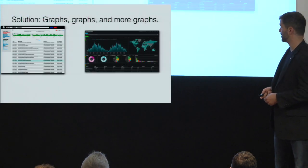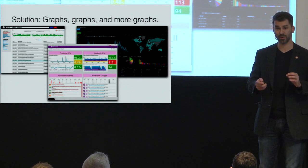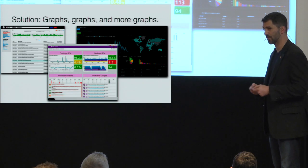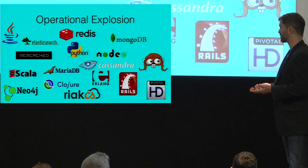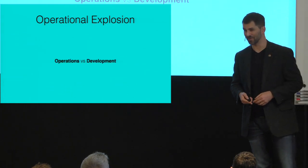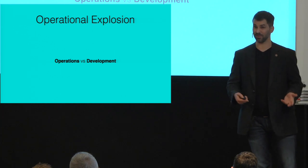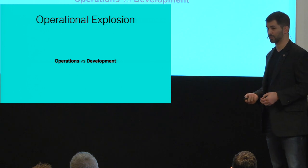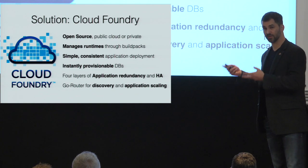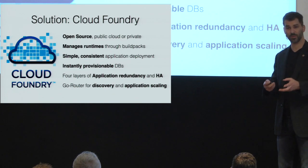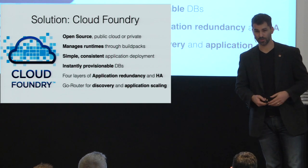Flying blind is solved with as much graphing as you can possibly fit. Of course, you've got information overload at this point, so the hard part is figuring out the actual important bits of information you should be graphing, monitoring, and logging. And then there's the operational explosion — the benefit of microservices is that your teams can choose whatever technology they want; the downside is that your teams are going to choose whatever technology they want, and your operations people are probably going to quit. This is why we built Cloud Foundry — it acts as a gateway between your operations people and developers so they can provision whatever databases they want, scale apps up and down, and deploy without extra load on operations.